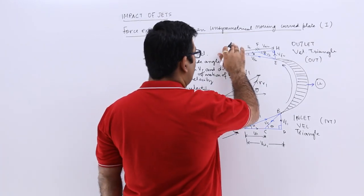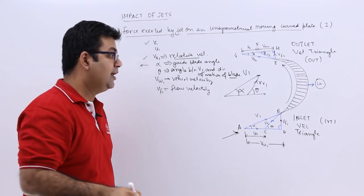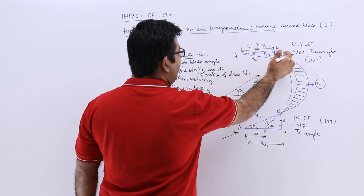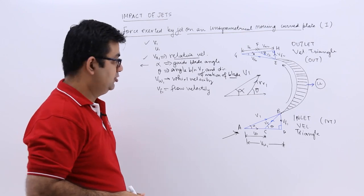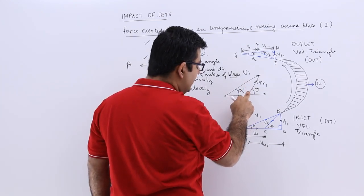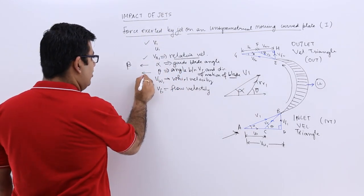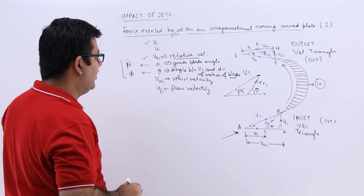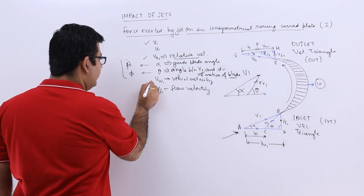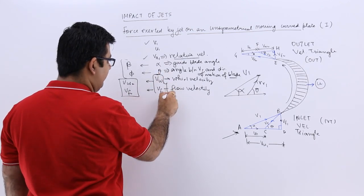Similarly, everything on the IVT has a counterpart on the OVT. Corresponding to alpha, on the OVT you have beta — the angle between the absolute velocity V2 and the direction of motion (line GH). Corresponding to theta, the angle between the Vr value and the plate velocity, you have phi on the OVT, relating Vr2 and U2. You will also have Vw2 and Vf2 on the OVT, corresponding to Vw1 and Vf1 on the IVT.